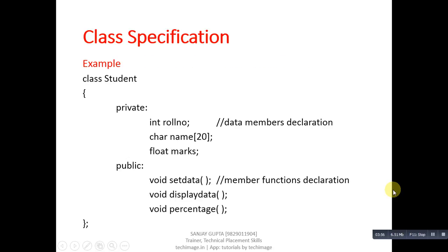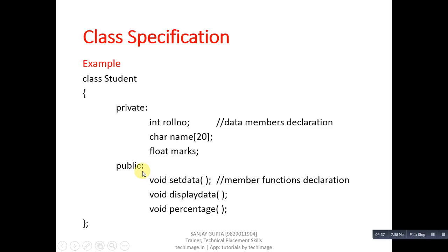Here is an example of class specification. As in the syntax, 'class' is a keyword, then the name of the class is 'student'. Inside the curly braces, the first access specifier is 'private' and the second is 'public'. Inside private, there are three variables — these are the data members. In the public section, three functions are declared: set_data, display_data, and percentage — these are the member functions.